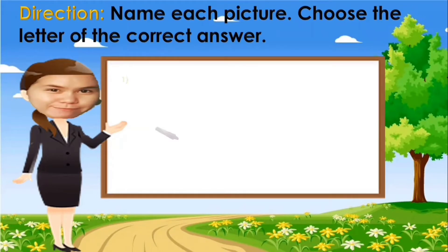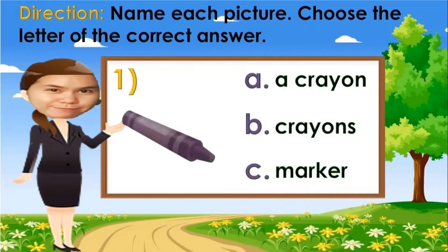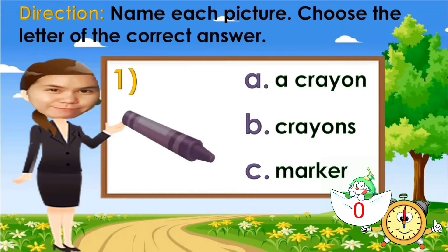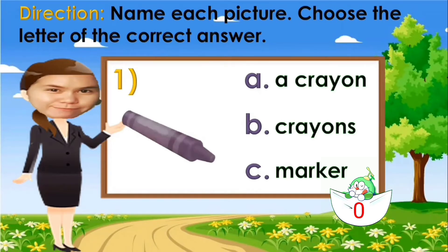So, here is the first picture. A. A crayon. B. Crayons. C. Marker. Your time starts now. Time is up. The answer is letter A: a crayon. Next.